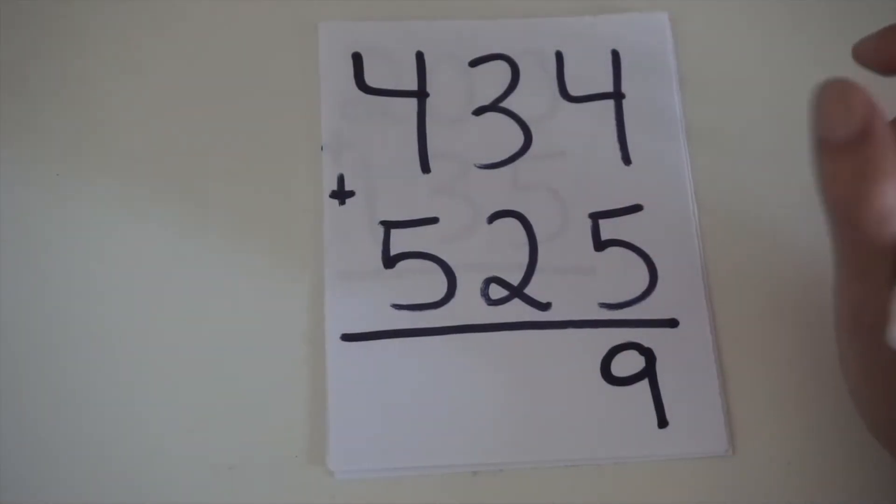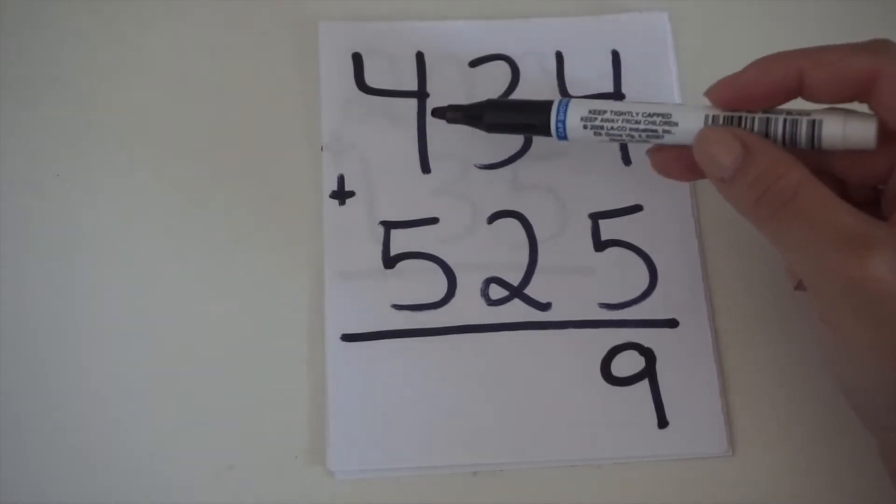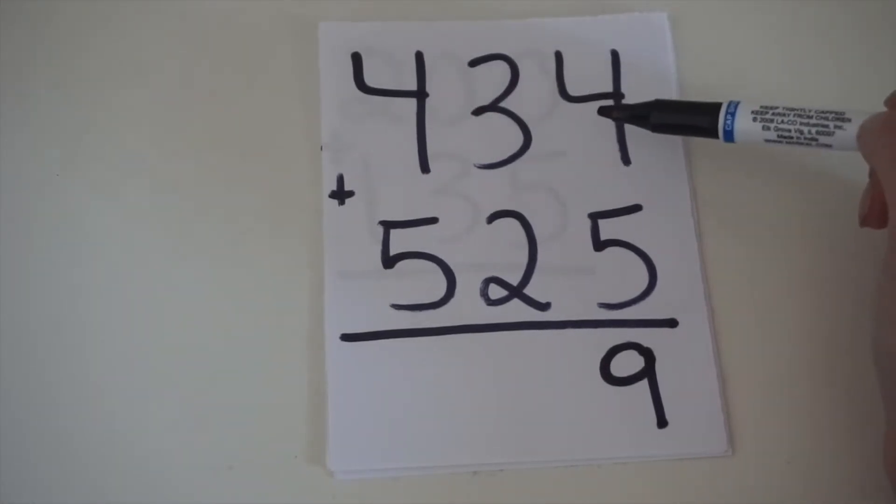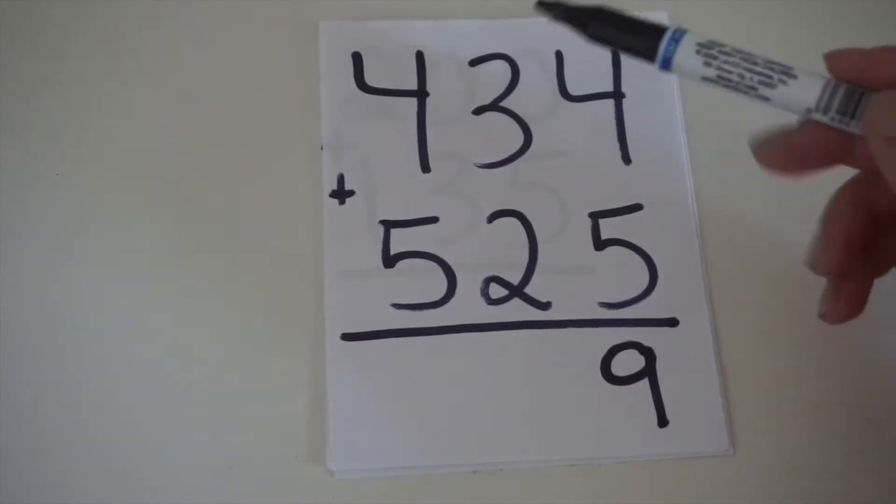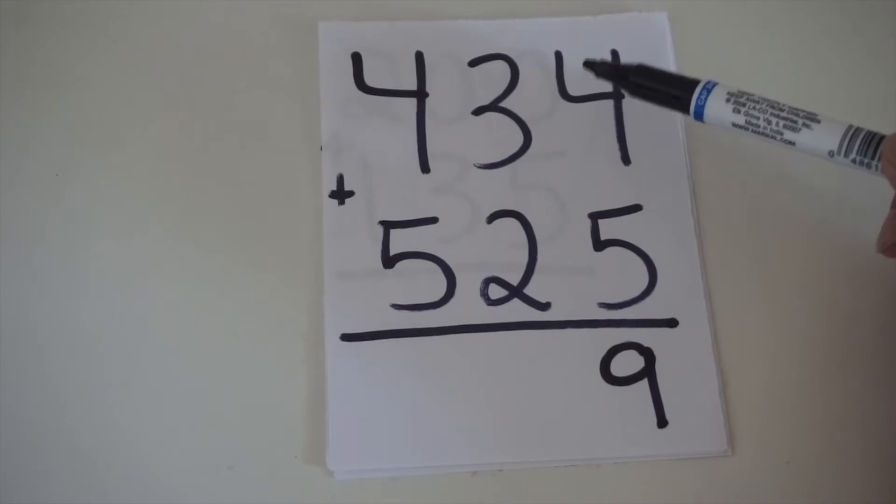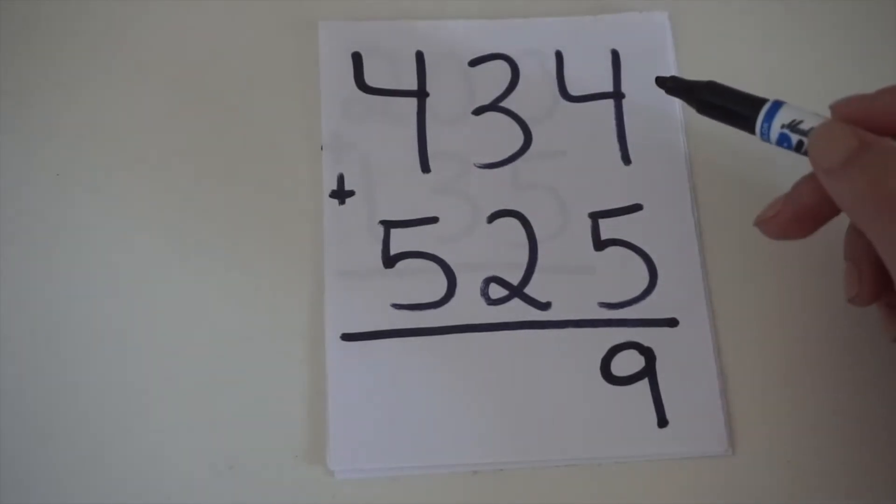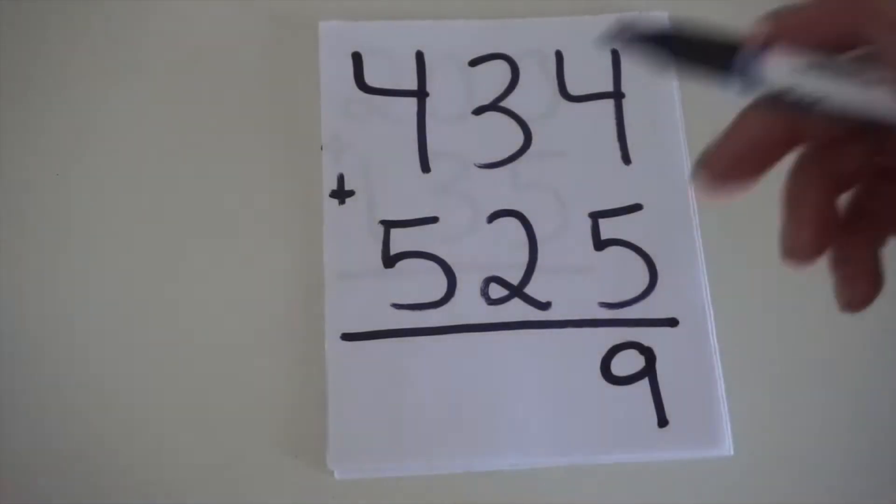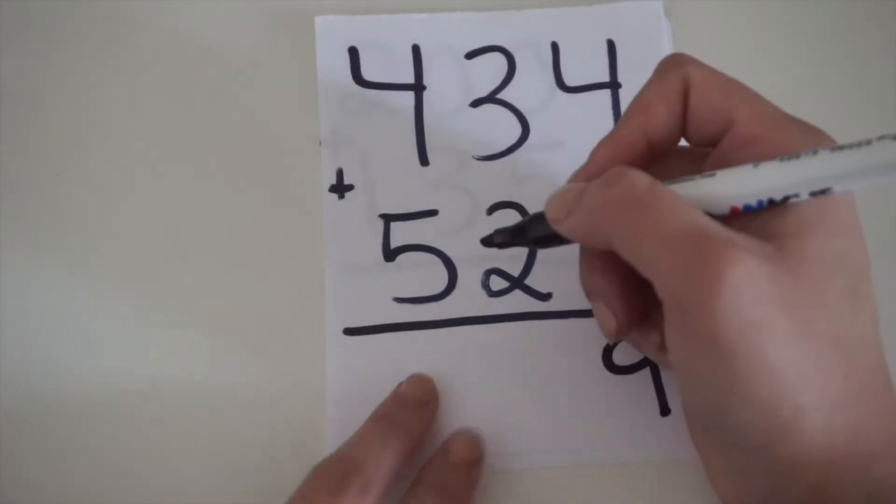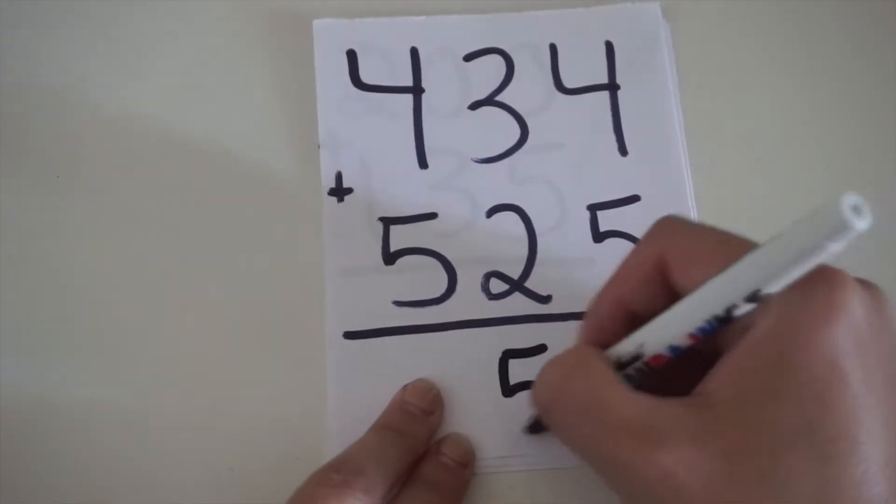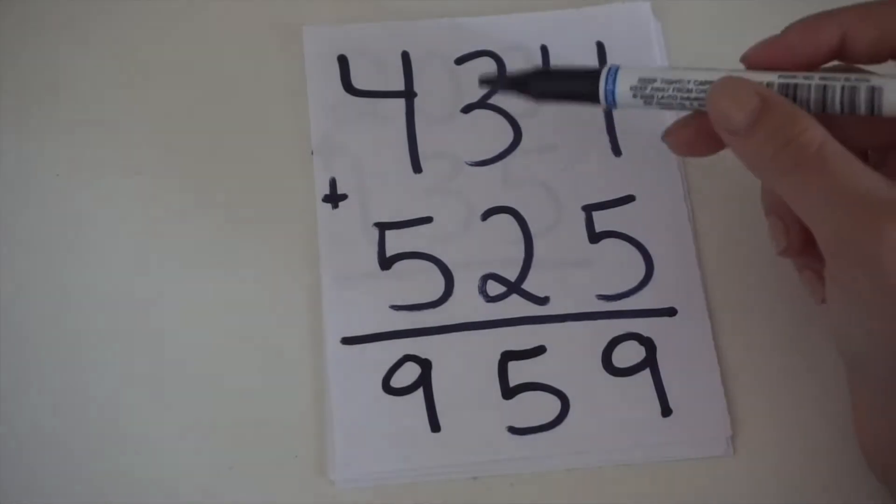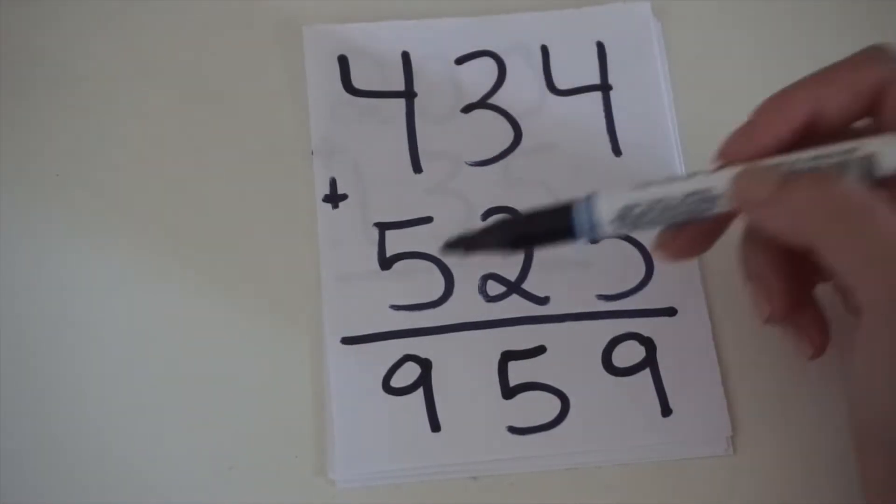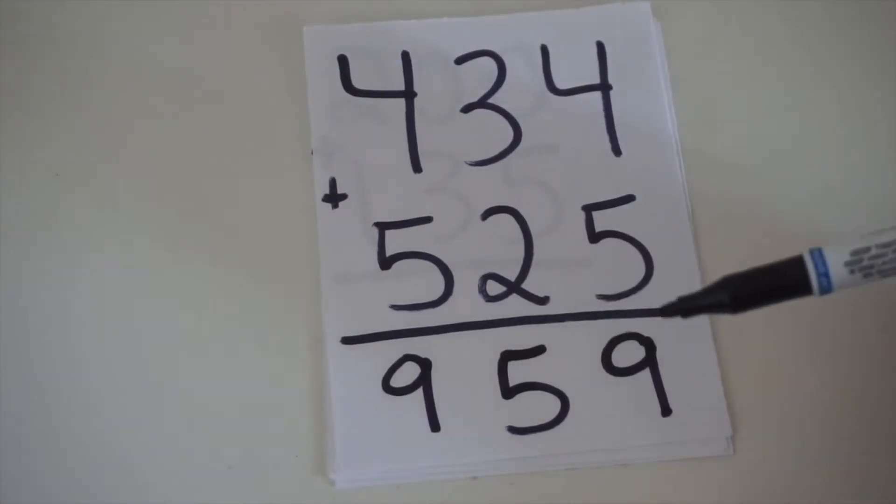Actually, to just start this problem, we have to make sure you read the big numbers so that you know what we're working with. So, we have 434 plus 525. Those are the two numbers we're working with. So, we're gonna add from up to down. 4 plus 5 equals 9, 3 plus 2 equals 5, and 4 plus 5 equals 9. So, 434 plus 525 equals 959.